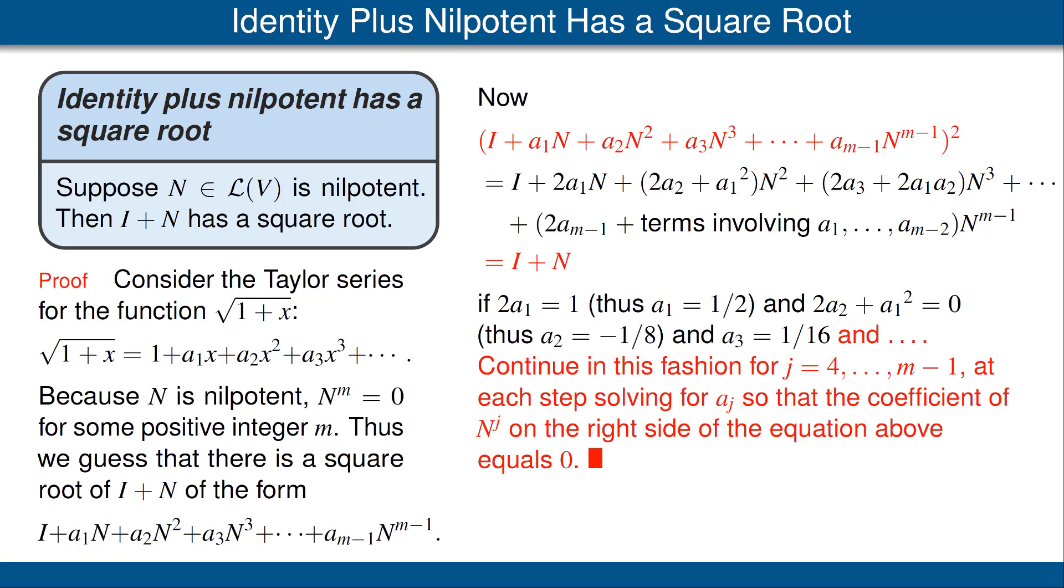And so on. Continue in this fashion. At each step, solving for aⱼ so the coefficient of N to the j on the right side of the equation above is 0. And we can always do that because the expression always involves the coefficient aⱼ plus lower order terms that we've already solved for. So in other words, there is a choice such that the expression in the last line of the first column, when squared, gives exactly I plus N. Conclusion, I plus N has a square root, completing the proof.